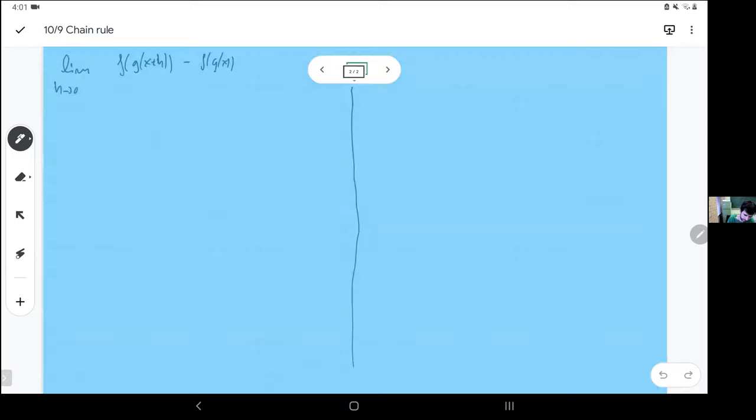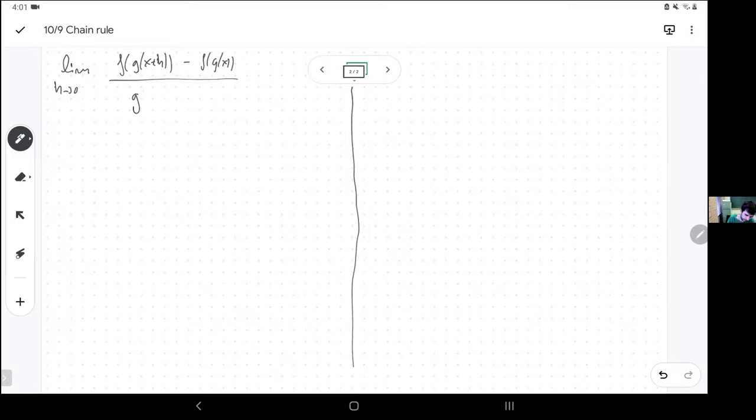And in the denominator, I had the change in g. So this looks like the derivative because this pretty much looks like somehow the change in g, and this looks like the change in f as g changes. So maybe all I need to do is just give everything new letters so that it becomes clearer.